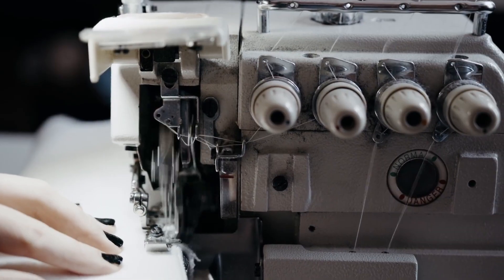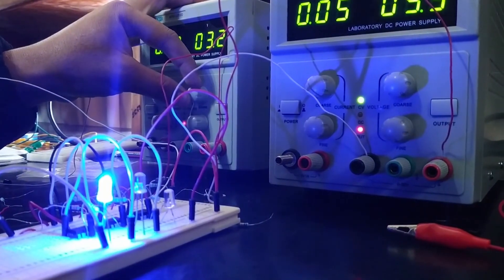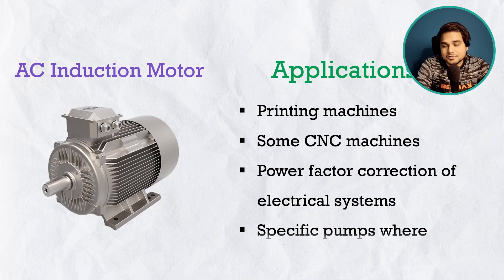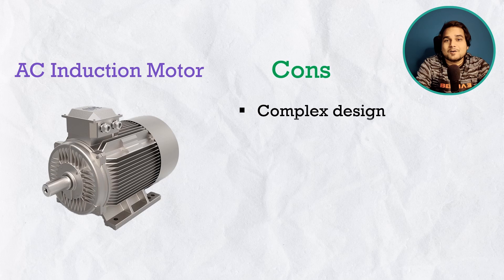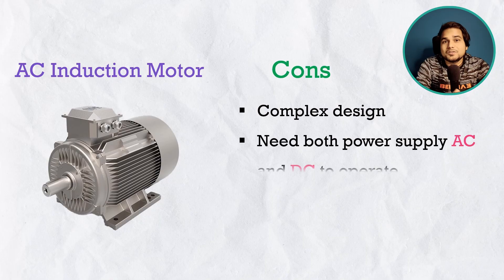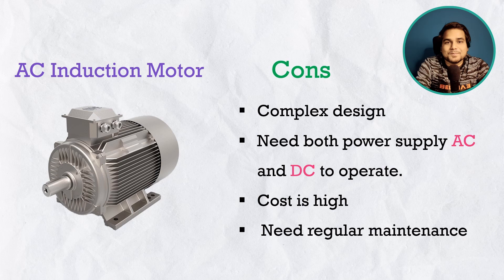Applications of the AC synchronous motor include printing machines, some CNC machines, power factor correction in electrical systems, and specific pumps where constant flow is required. However, the cons are its complex design — it is a doubly-excited motor requiring both AC and DC supply to operate — and higher cost and higher maintenance. So you won't see this motor very often.